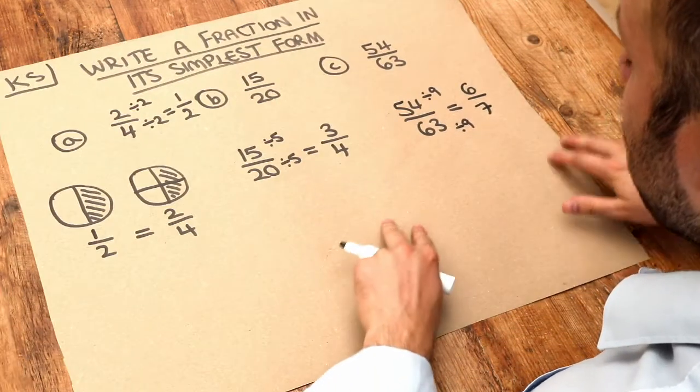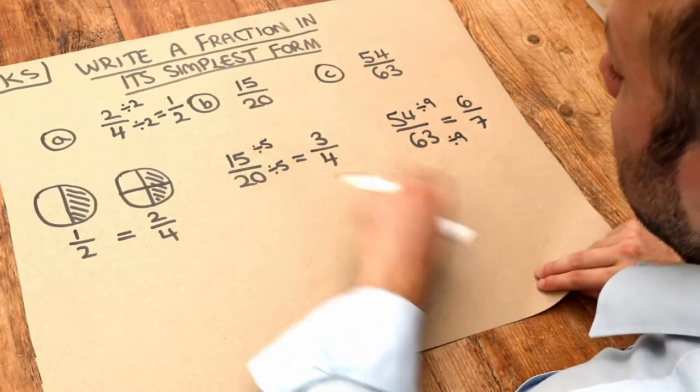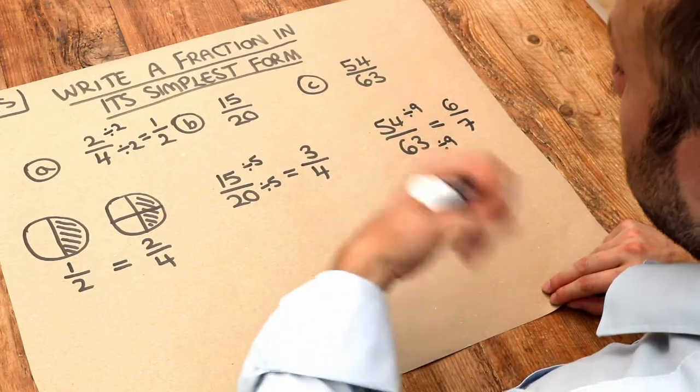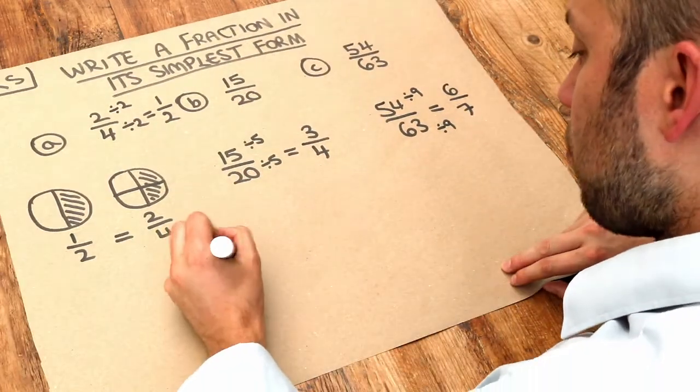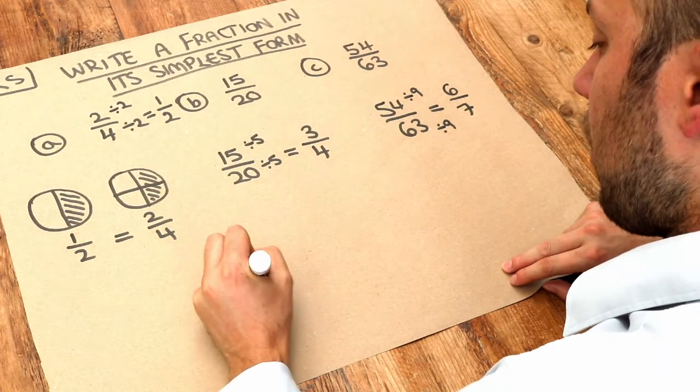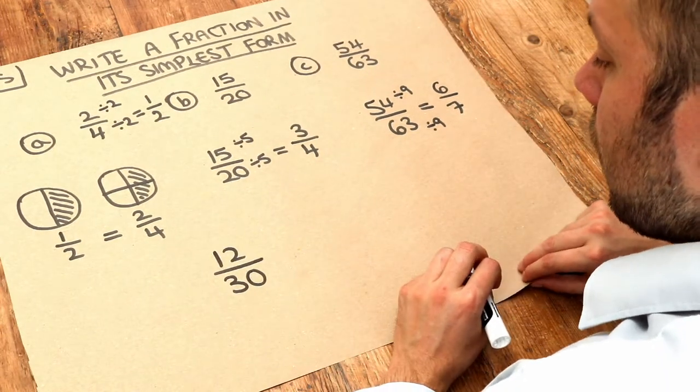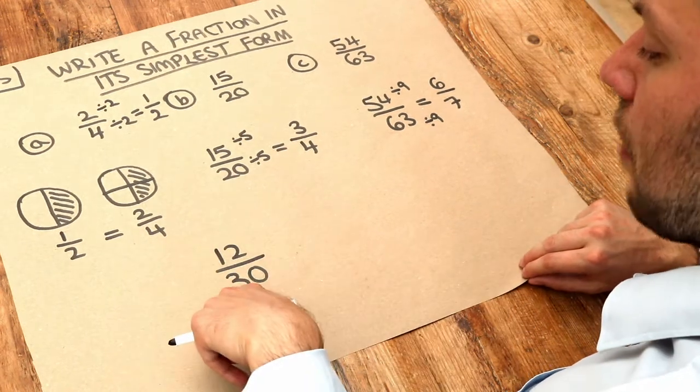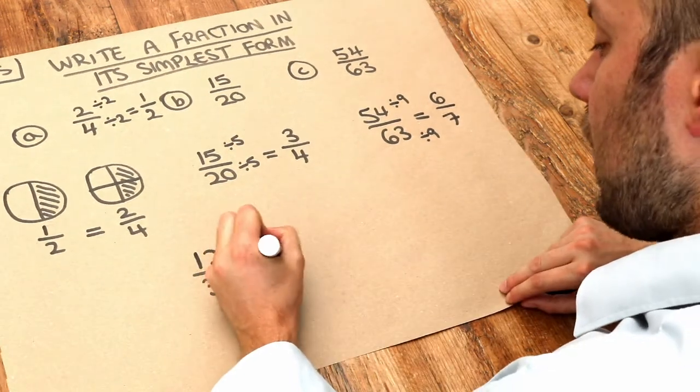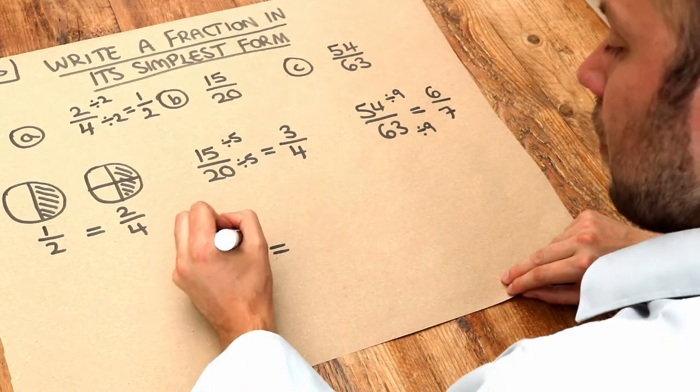Now one final point to make is that you don't necessarily have to find the biggest number that goes into these. You can simplify the fraction multiple times. For example, if I had 12 over 30 and I want to write it in its simplest form, I could try and find the biggest number that goes into both. But just notice that these are both even, so they must both divide by 2.